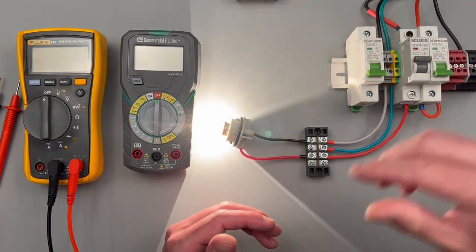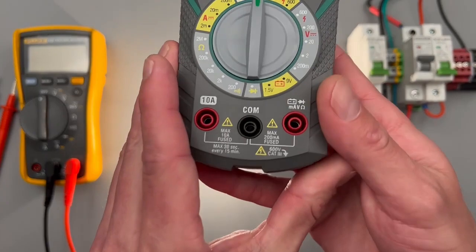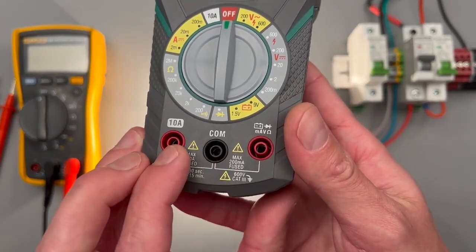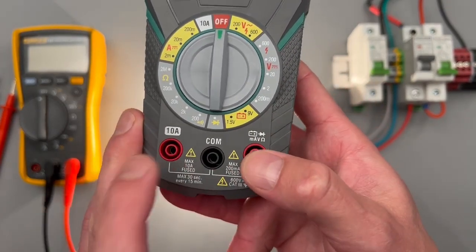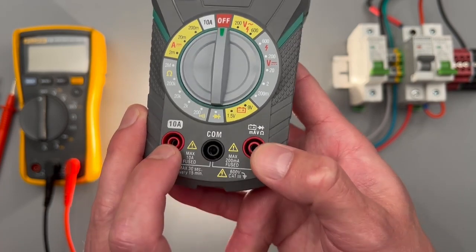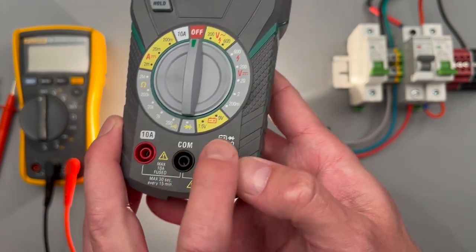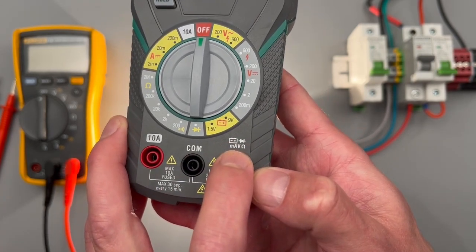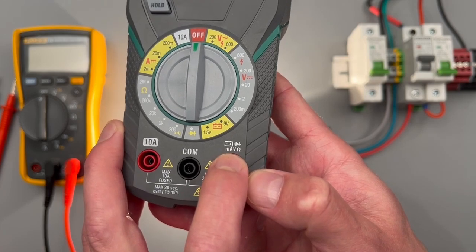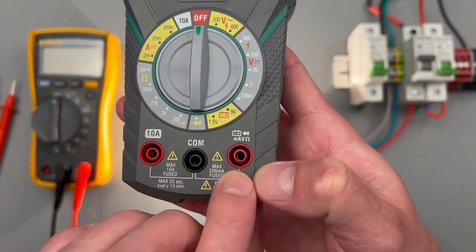Now on your meter you're going to notice above your ports you have your common for your black lead, and then you may or may not have two separate red lead ports. You'll want to look over to see what it's rated for. For your measurements in the configuration we'll be using, our measurements are going to be done in parallel with a live circuit.